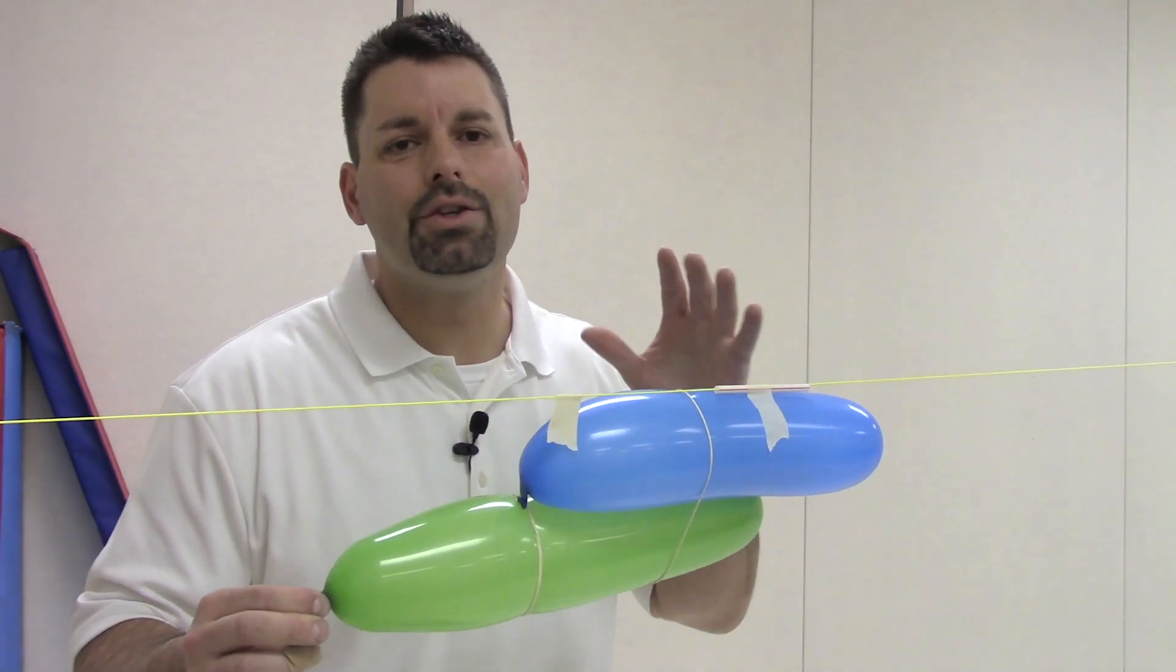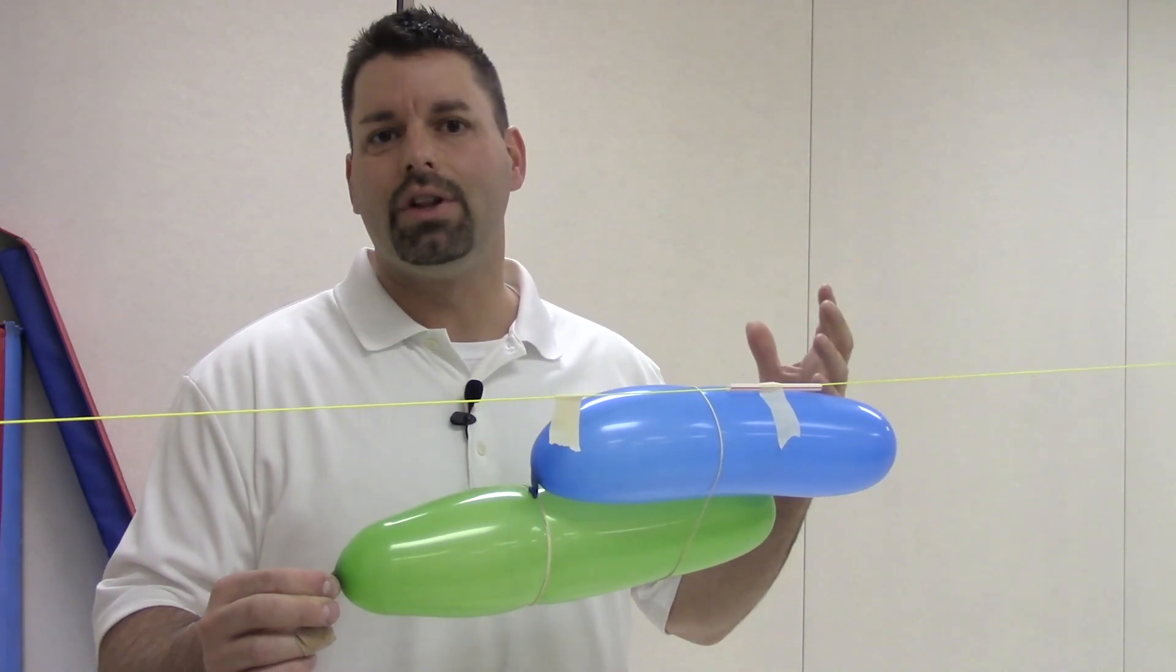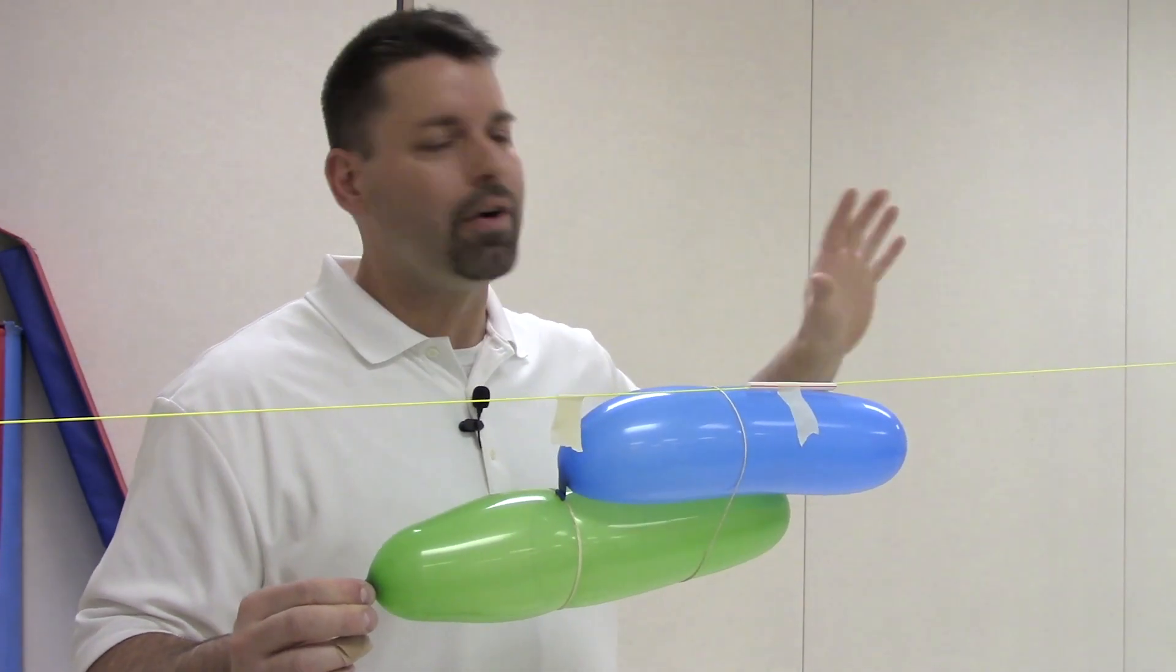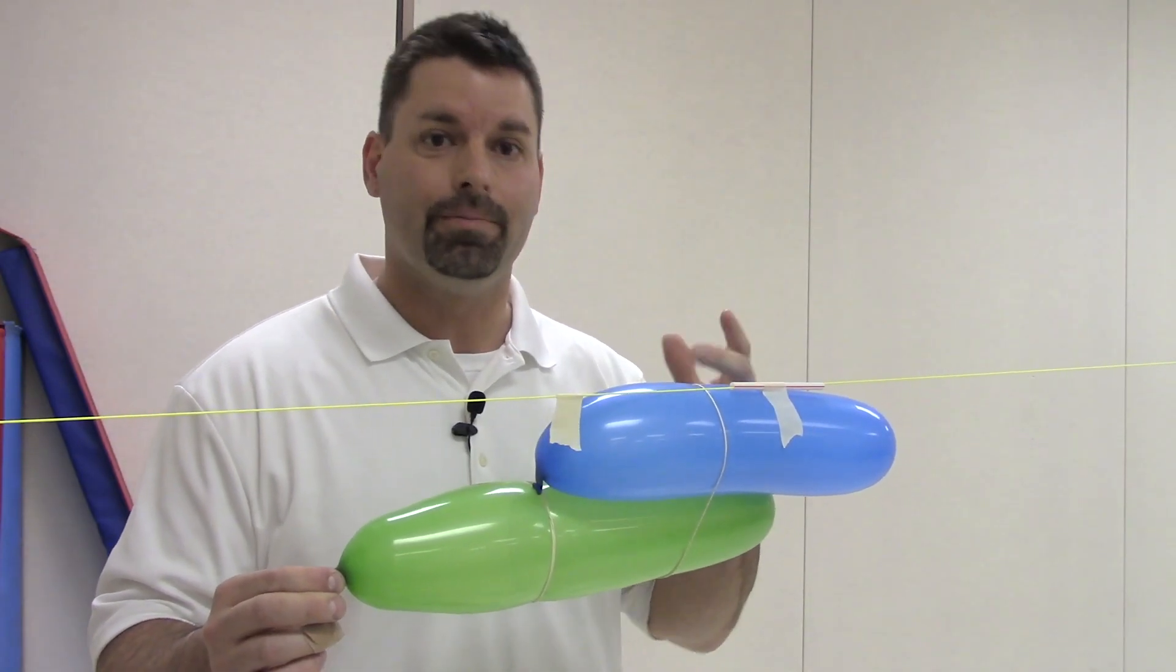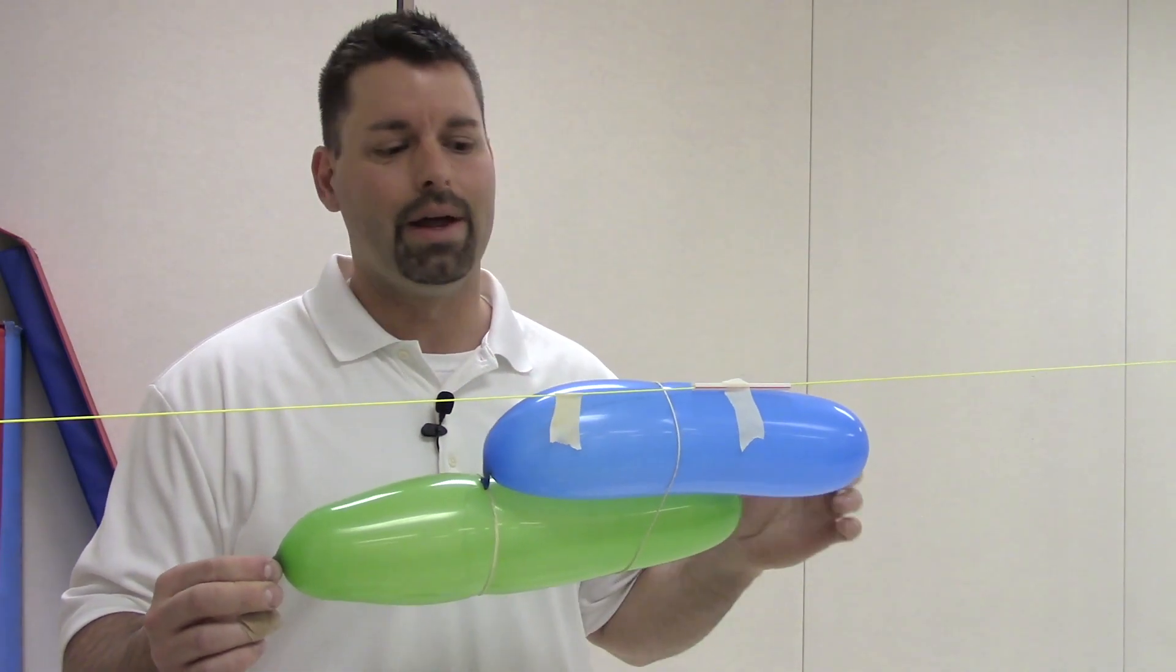So our two-stage rocket made it all the way to the end of our fishing line. It looks like we're going to need a longer fishing line if we wanted to get an accurate measurement and collect that data to see how far our two-stage rocket could actually go. But I wanted to try our second design for a two-stage rocket using only rubber bands.